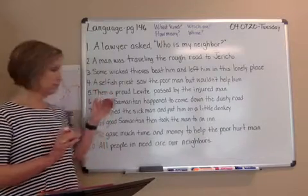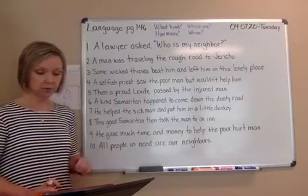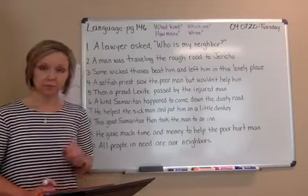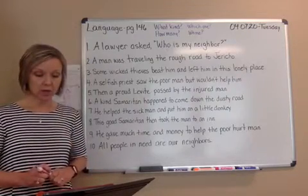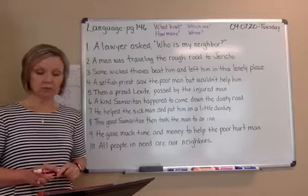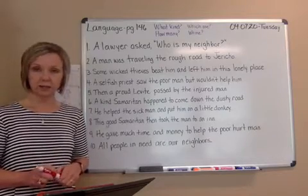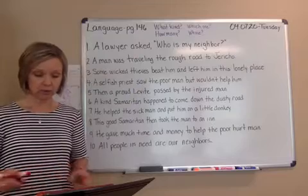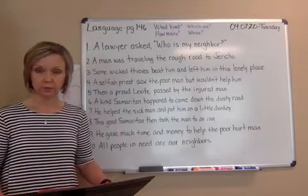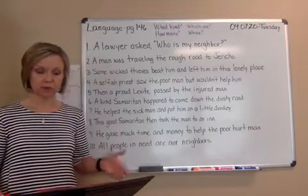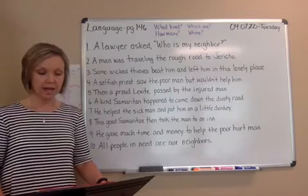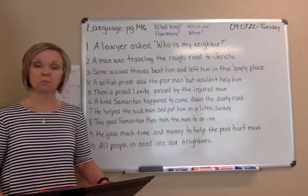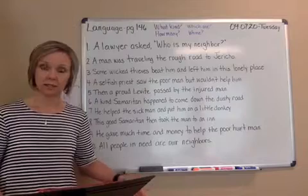I have numbers 1 through 10 on the board — that goes with Think B. So let's look at Think A real quick. Write the adjective and noun phrase for each sentence. John has a raincoat — John's raincoat, showing that possessive there. I lost a dollar — you would write my dollar.